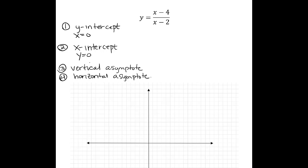Let's find the y-intercept. When x equals 0: y = (0 − 4)/(0 − 2) = negative 4 over negative 2. The negatives cancel, leaving 2. So the y-intercept is at 2.